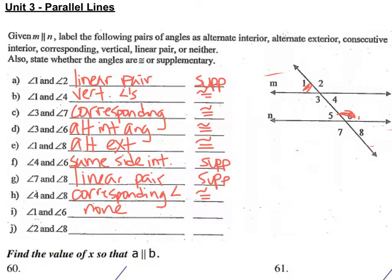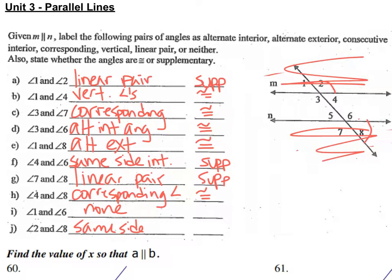And then we have angle 2 and angle 8. So angle 2 and angle 8 are on the same side of the transversal, and they're on the outside of your parallel lines, so they're same side exterior angles, and same side exterior angles are going to be supplementary.